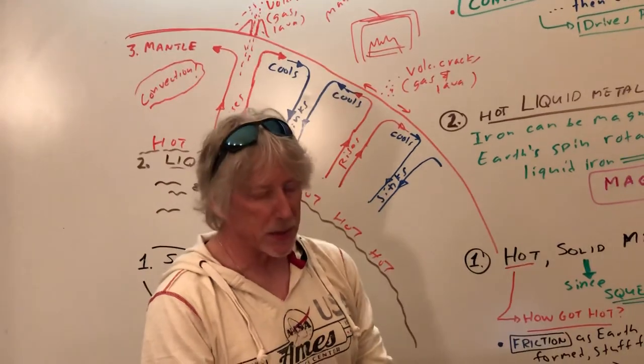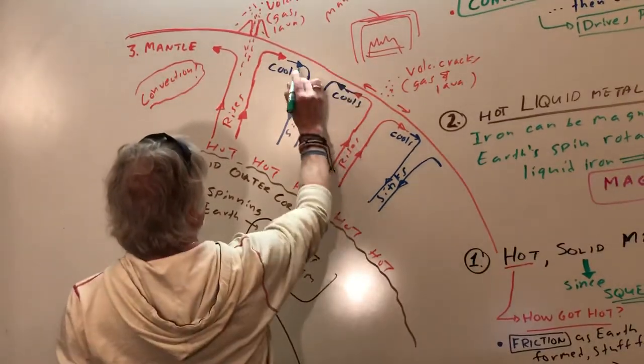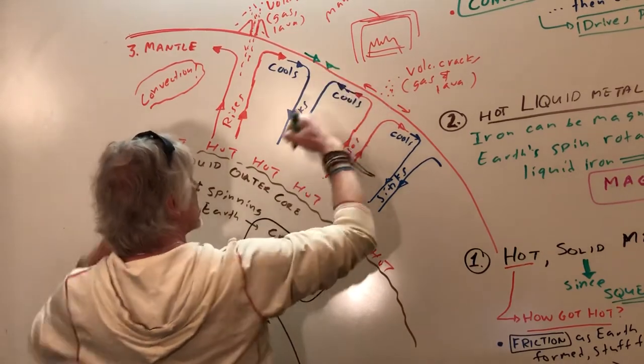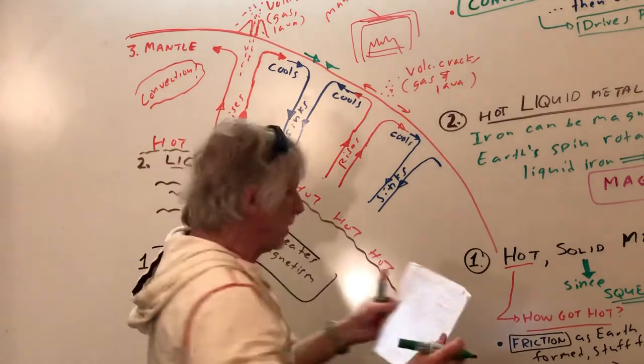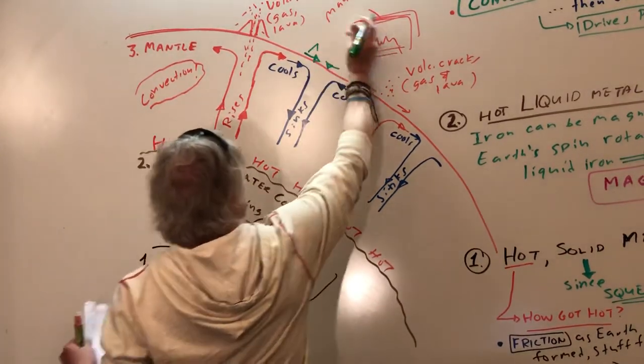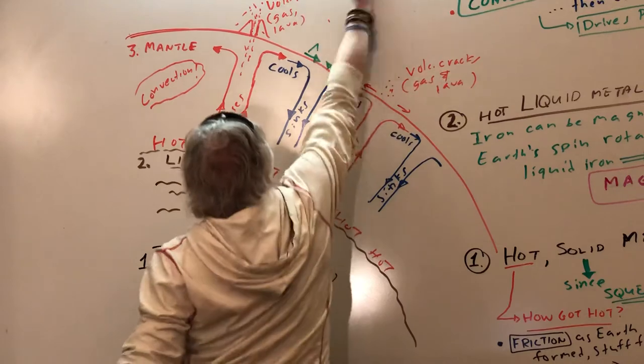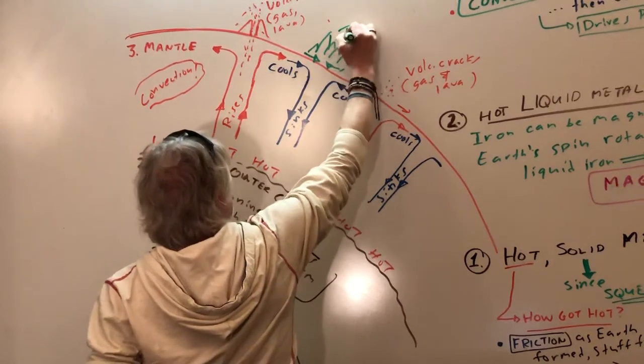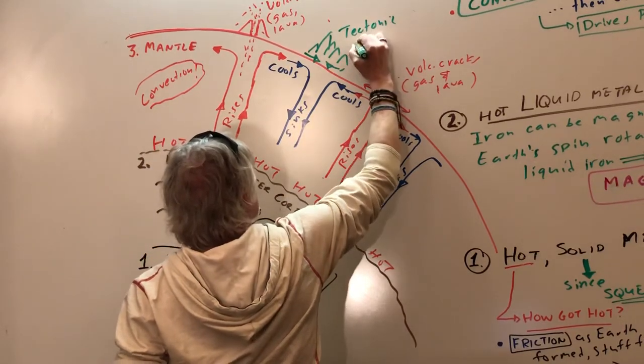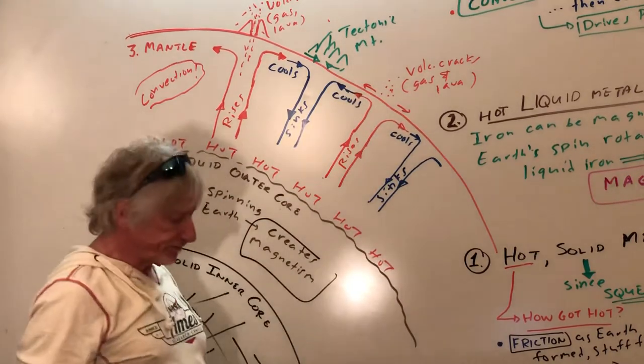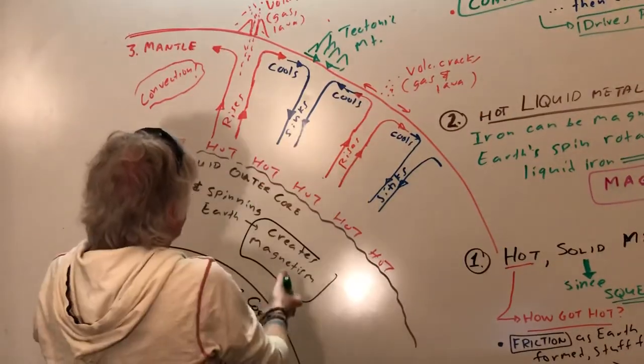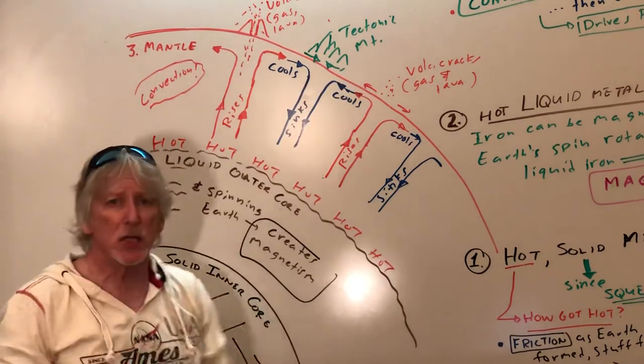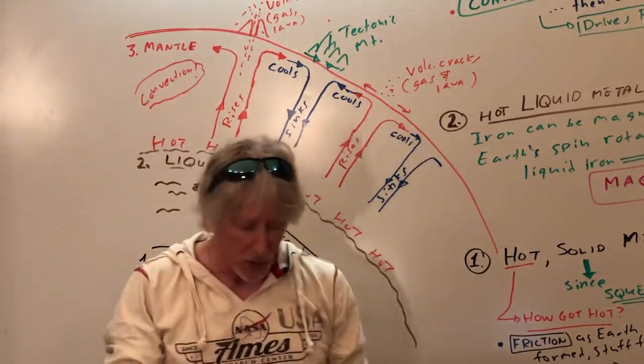And what is that? Because as this is coming this way and this is coming this way, the crust comes together. Crumples up in a variety of ways. We get tectonic mountains.